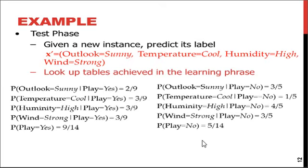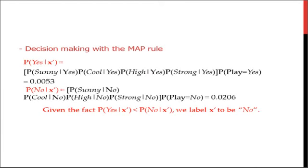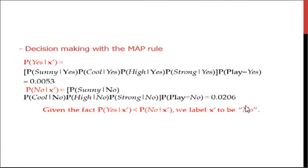The prior probability P(play=yes) = 9/14 and P(play=no) = 5/14. Applying the Bayes rule and MAP decision rule, we compute: P(yes | X') = P(sunny|yes) * P(cool|yes) * P(high|yes) * P(strong|yes) * P(yes) = 0.0053, and P(no | X') = P(sunny|no) * P(cool|no) * P(high|no) * P(strong|no) * P(no) = 0.0206. Since 0.0206 > 0.0053, the MAP decision rule selects class=no, so under conditions sunny, cool, high, strong — the prediction is that tennis should not be played.